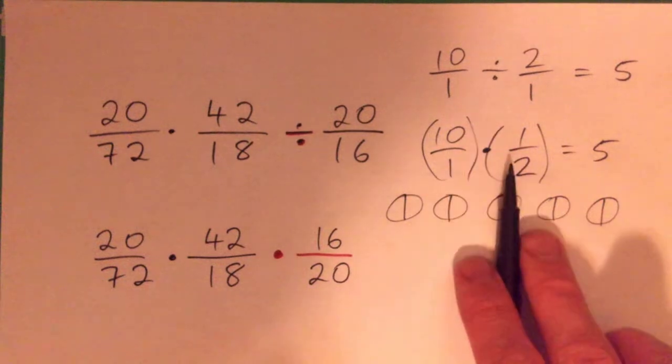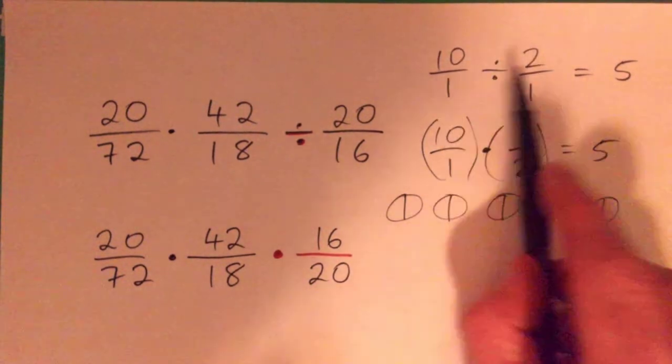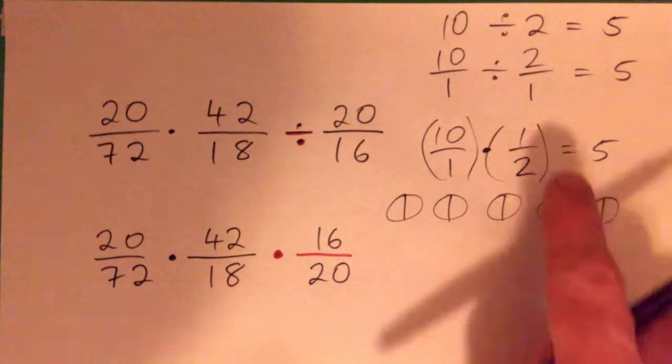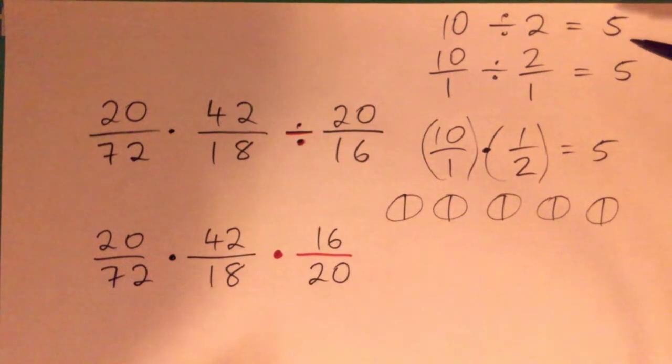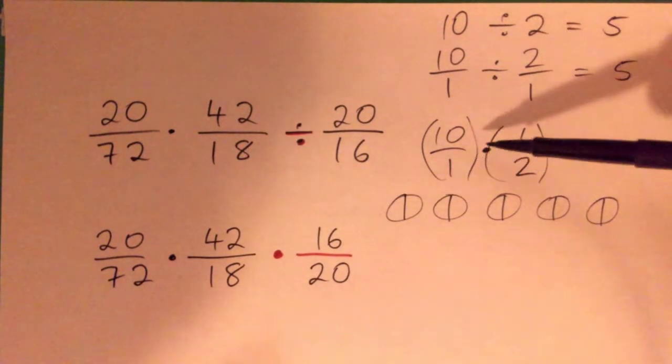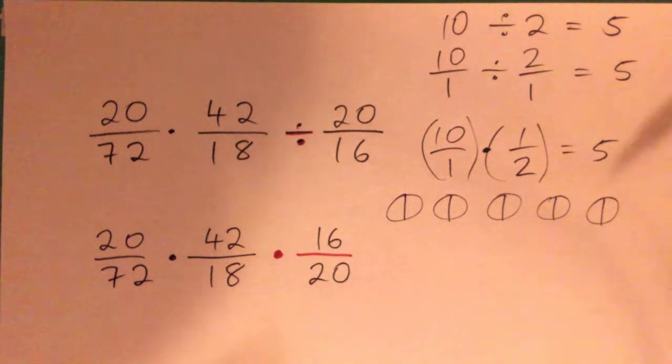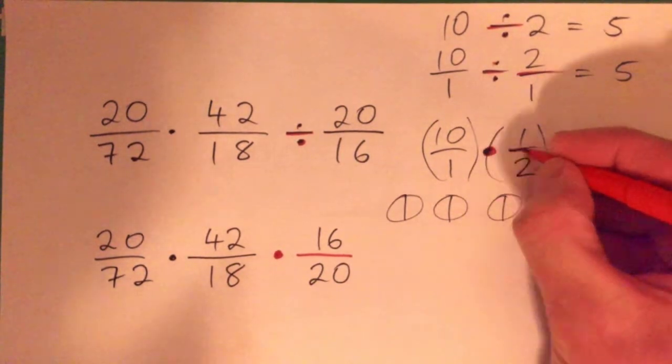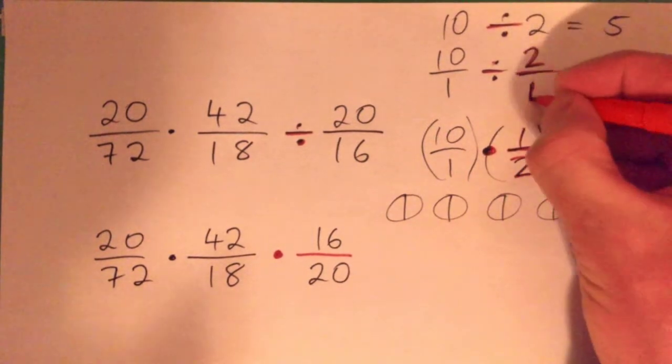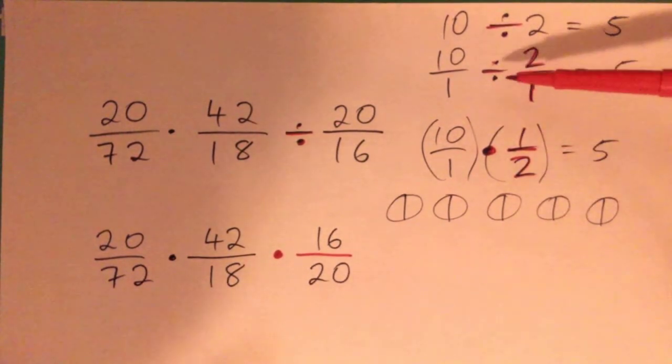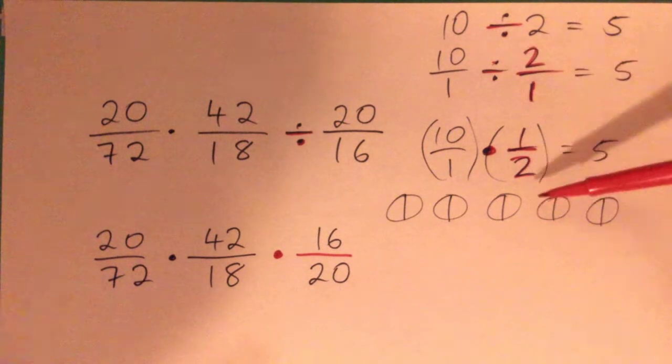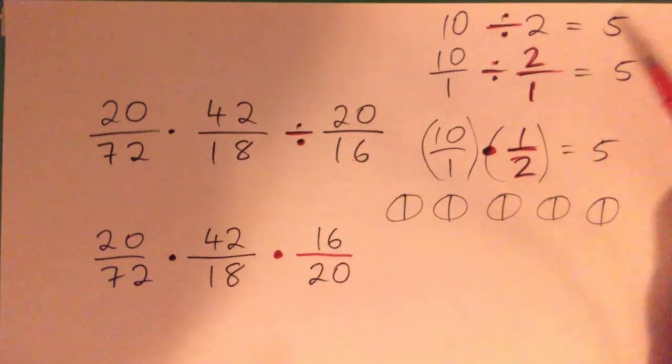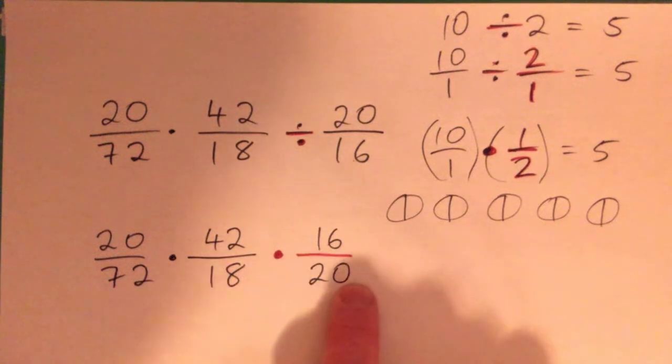Doesn't it? So 10 times a half is the same thing as 10 divided by 2, isn't it? So this is just 10 divided by 2. Does that make sense? 10 divided by 2 is 5, right? Yeah. 10 times a half is 5, isn't it? So dividing, when you divide, you flip, you multiply by the reciprocal. Don't you? Does that make sense in this example? That dividing by 2 is the same thing as multiplying by a half, isn't it? Right. Cool. So same thing. So dividing by 20, 16, same thing as multiplying by 16 20ths.